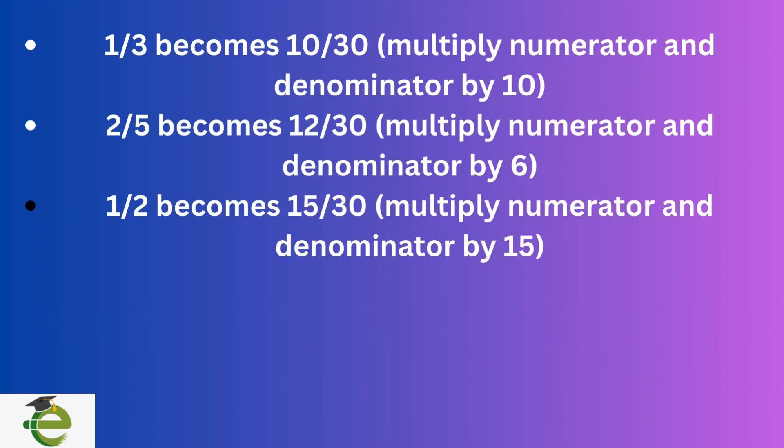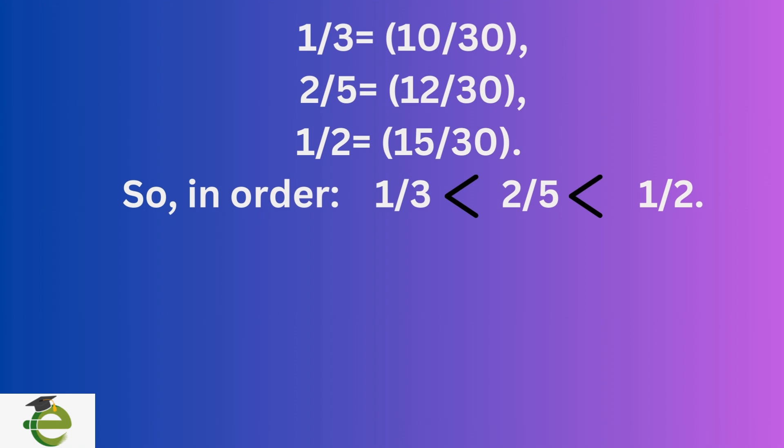Next, convert each fraction so they all share the common denominator. Once the denominator becomes same, then compare the numerators. Finally, arrange the fractions: one-third, two-fifths, one-half.